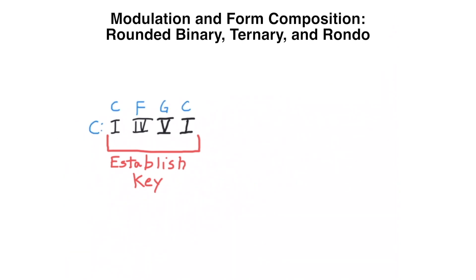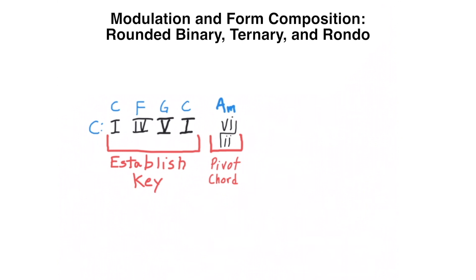The next chord in the progression will be our pivot chord, which is also known as our common chord. We will be modulating to the key of the dominant, which is the key of G. There are a few chords in common between the key of C and the key of G, but the most common chord to use as a pivot between these two keys is A minor. A minor is a 6 chord in the key of C and a 2 chord in the key of G. The next chord in the progression should be a dominant function in the new key — let's go with the strongest dominant function chord, which is 5-7.